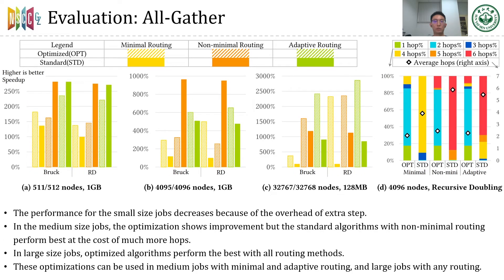Here is the result of MPI all-gather operation. For the small-sized job, the optimized algorithm speeds up only with minimal routing. In other conditions, the overhead of the extra step in reversed recursive doubling and reordered Bruck algorithm is not negligible. In the medium-sized job, the optimization shows improvement but standard algorithms with non-minimal routing perform best, at the cost of much more hops — nearly all packets traverse five or six hops. In the large-sized job, optimized algorithms perform best with all routing methods. Thus, we suggest this optimization be used in medium-sized jobs with minimal and adaptive routing, and large-sized jobs with any routing.